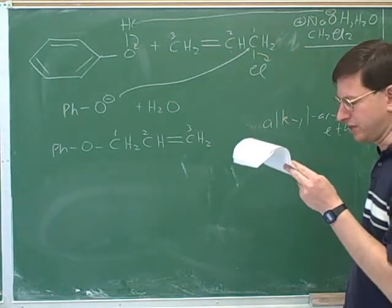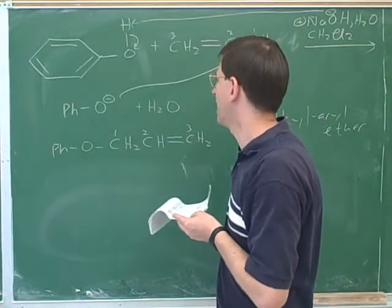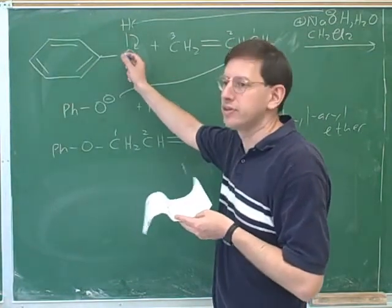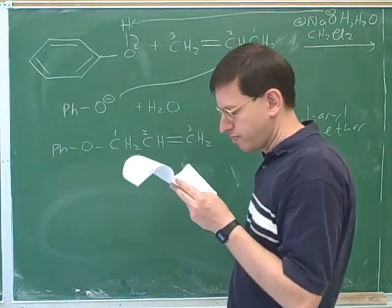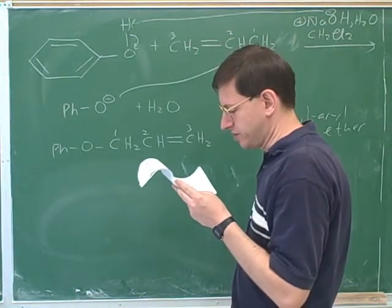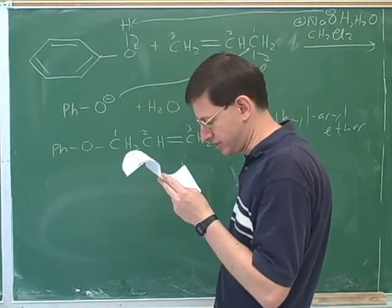This is actually called the Williamson ether synthesis. Williamson ether synthesis is when you deprotonate an alcohol so it can act like a nucleophile, and then it attacks an alkyl halide. Back in the earlier term, you probably saw how to do Williamson ether synthesis with normal alcohols. And we're just applying that now to benzene.